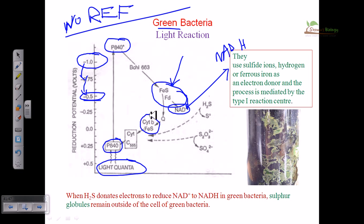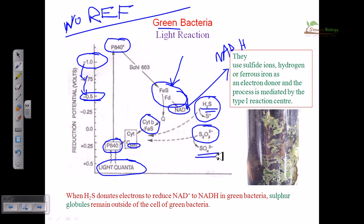The electron then transfers from this protein to quinones, then quinone to cytochrome b, then cytochrome bc1, then cytochrome c - this is the c555 complex - and finally returns to P840. In this case also, the electron donor is H2S; it could also be S2O3²⁻. The ultimate oxidized form of sulfur is SO4²⁻, while H2S is the highest reduced form. When H2S donates an electron it forms elemental sulfur, and when S2O3²⁻ donates an electron it produces SO4²⁻.